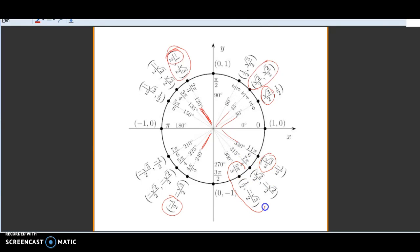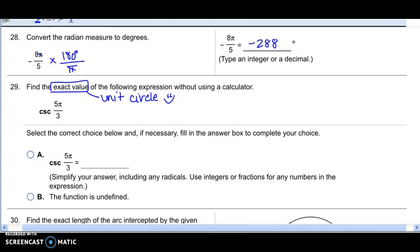There we go. There's 5π over 3, and our ordered pair for 5π over 3 is 1 half and negative square root of 3 over 2. Okay, and cosecant is the inverse or the reciprocal of sine. So the sine of 5π over 3 would be the y-coordinate, but since I want the reciprocal, it's going to be 1 over y.